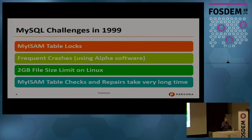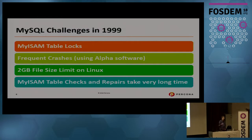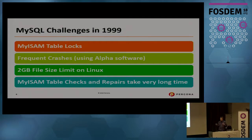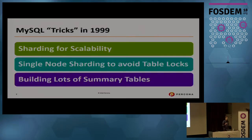What kind of challenges did we have in 1999 with MySQL? MyISAM table locks — that is very painful. Using alpha software we also had a lot of crashes, so a lot of learning experience. We also had a basic but funny problem: Linux at that time had a two-gigabyte file limit for many filesystems, so you couldn't have quite large tables. And MyISAM table checks and repairs took a lot of time.